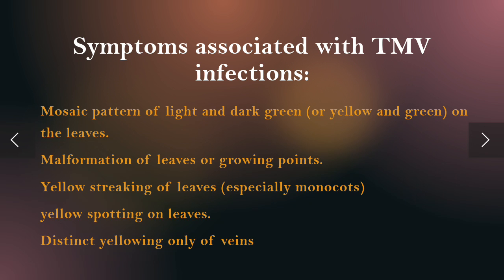Symptoms associated with TMV infection include a mosaic pattern of light and dark green color appearing on the leaves, malformation of leaves or growing points, yellow strapping of leaves especially in monocots, yellow spotting on leaves, and distinct yellowing only on veins.